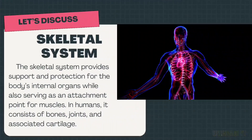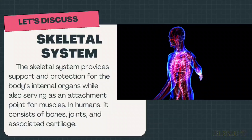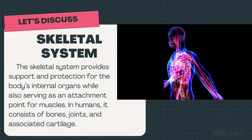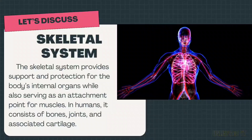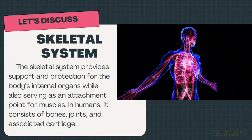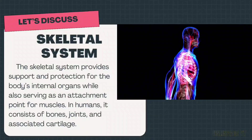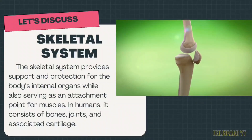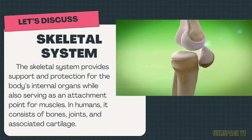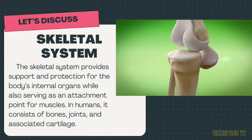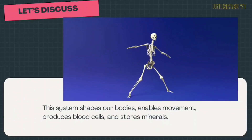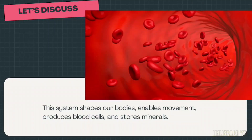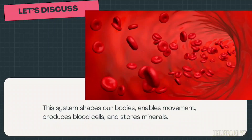Let's discuss! What is a skeletal system? The skeletal system provides support and protection for the body's internal organs while also serving as an attachment point for muscles. In humans, it consists of bones, joints, and associated cartilage. This system shapes our bodies, enables movement, produces blood cells, and stores minerals.